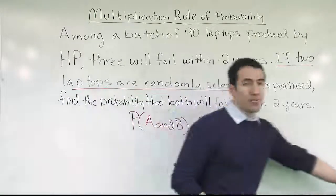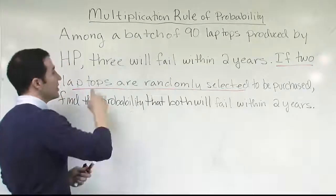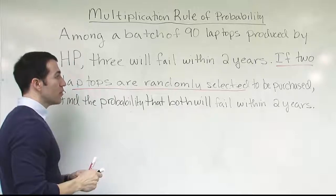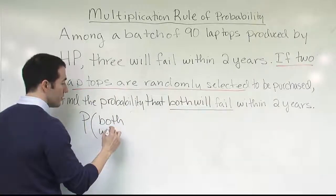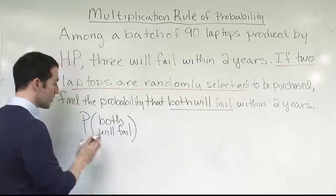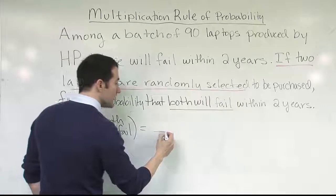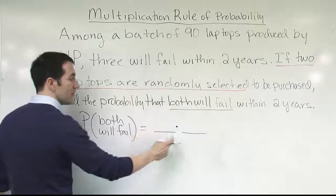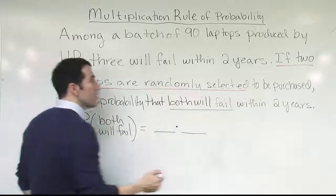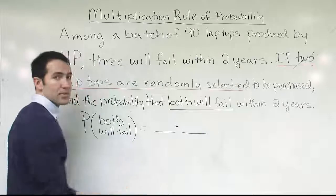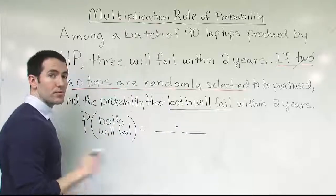Let's work out this particular problem. We write: find the probability that both will fail. The fact that I'm selecting two laptops at random means I have two spaces to place probabilities — one probability multiplied by another probability. Once I've used that 'two,' it's spent; I won't use it again. I won't put a two in my fraction somewhere because it's used up once I realize it tells me I have two spaces for probability and signals the multiplication rule.